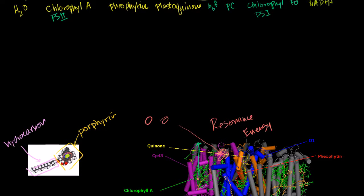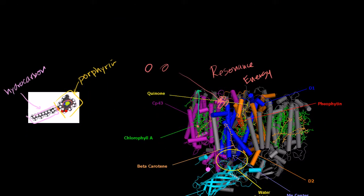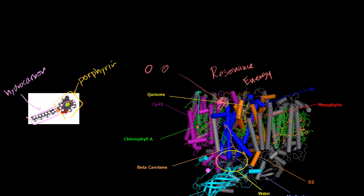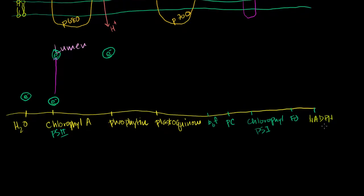Pheophytin actually looks just like chlorophyll, but it has no magnesium ion in the middle. The pheophytin you actually see in this diagram is part of this photosystem complex. So you can imagine the electron jumping from the chlorophyll to the pheophytin that does not have that magnesium in the center. And when it sits in the pheophytin, it's at a very, very high energy state.